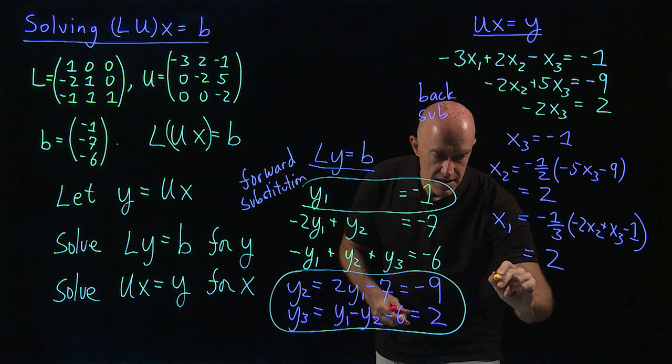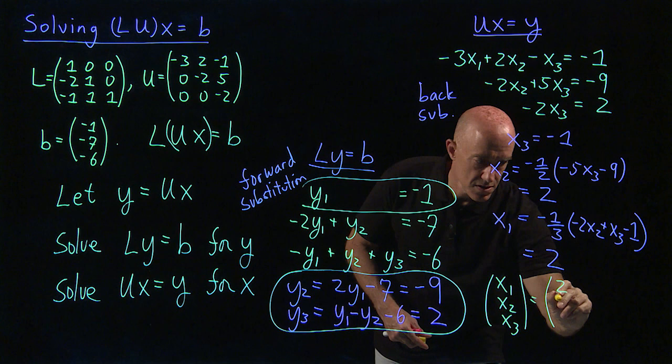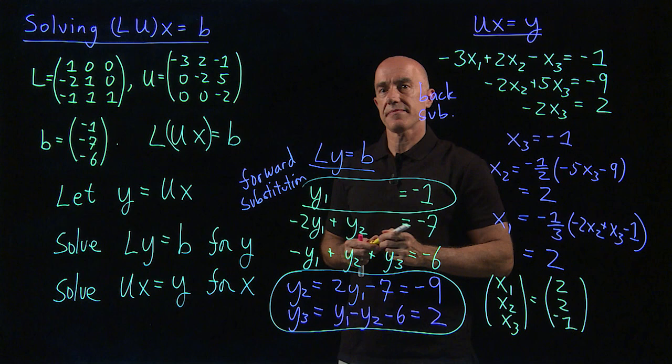So I can write the final solution here. X1, X2, X3 then is given by this vector two, two minus one.